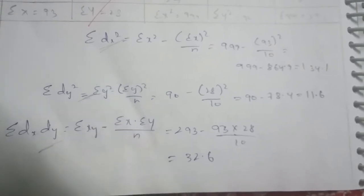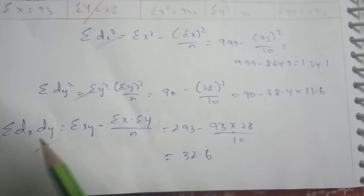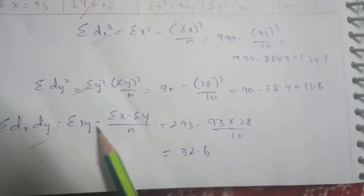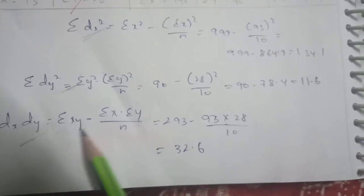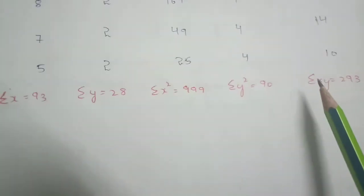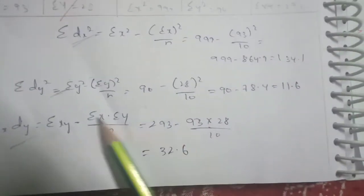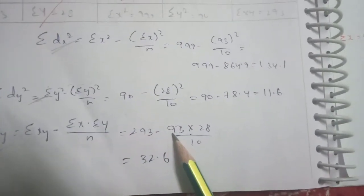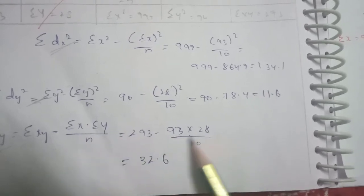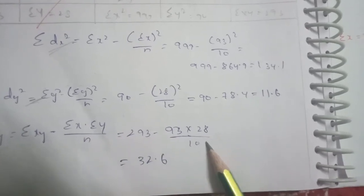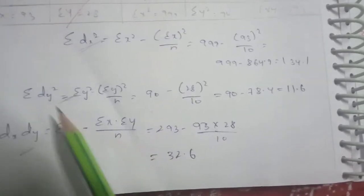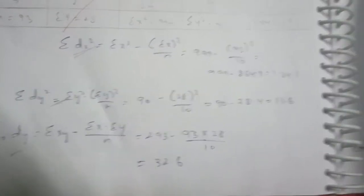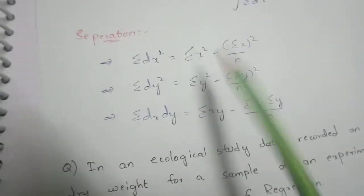Sigma DX·DY equals Sigma XY minus (Sigma X times Sigma Y divided by N). Sigma XY is 293, Sigma X is 93, Sigma Y is 28, N is 10. So: 293 minus (93 times 28 divided by 10) equals 32.6. All three individual formulas are now complete.